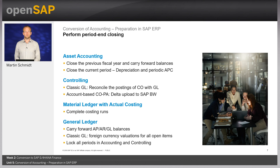Just before the start of downtime, as part of cut-over, carry out the usual period and closing activities for the previous fiscal period. In asset accounting, perform periodic asset postings completely, run the recalculation of plan depreciation, do your depreciation runs, make sure there are no update terminations, and once more reconcile asset accounting with the general ledger.